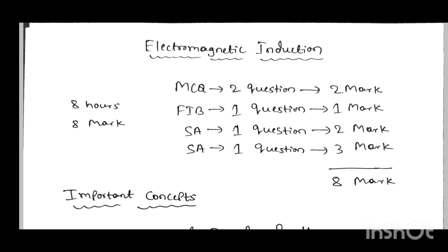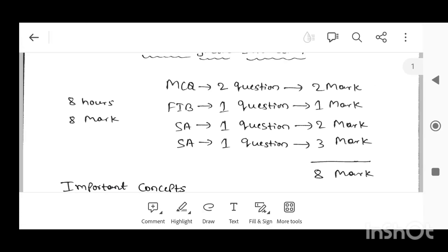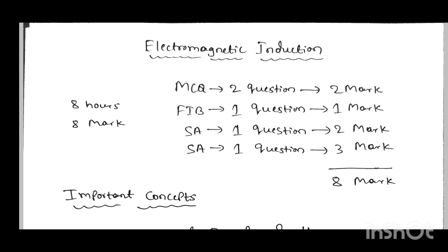First, let's go through the chapter Electromagnetic Induction. From this chapter, the total teaching hours is 8 hours and allotted marks is 8 marks. You will get two MCQ questions, one fill-in-the-blank question, one SA type question carrying 2 marks, and another short answer type question carrying 3 marks, totally 8 marks from this chapter.